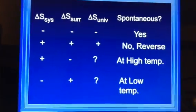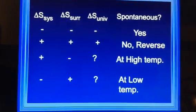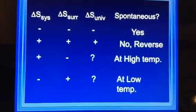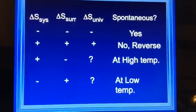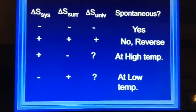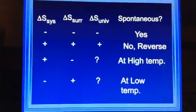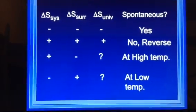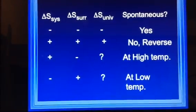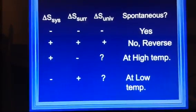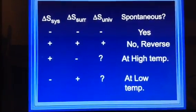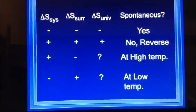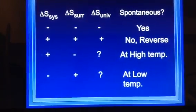So we talked about the system, surrounding, the universe, whether it's spontaneous or not. Right now, it would be a good time to pause this so that you can review this. But if the system is negative, the surrounding is negative, the universe is negative, it is spontaneous. If the change is positive across all three, it is not spontaneous. However, the reverse reaction is.